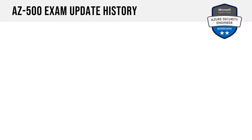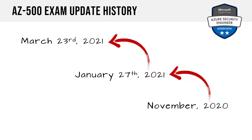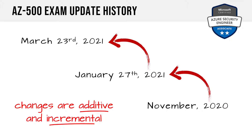More specifically, we saw a pretty sizable update to AZ-500 in November 2020. We saw an incremental update on January 27th of 2021, and then an even smaller incremental update on March 23rd of this year. All of these changes are additive and incremental, so there's no content disappearing — there's just a bit more being added. All of your existing prep going back to the November updates is 100% valid.